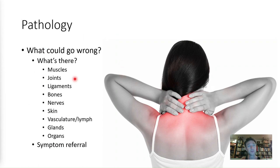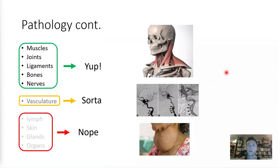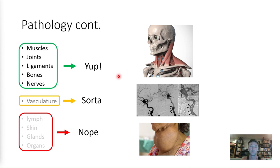In the cervical spine we have local structures, but we could also be getting symptom referrals — like problems with swallowing or breathing — which could be problems in the brain, brainstem, or down in the chest working its way up. Generally speaking, when we're talking about the musculoskeletal system it's fairly local. We're dealing mostly with muscles and joints: muscles, joints, ligaments, bones, nerves.